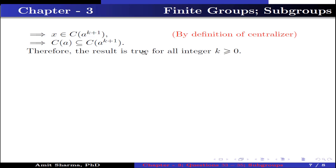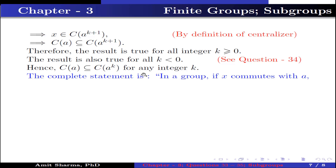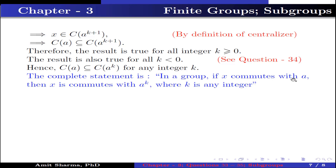Therefore the result is true for all integers k ≥ 0. The result is also true for k < 0 — for more detail see question number 34. Hence C(A) ⊆ C(Aᵏ) for any integer k. The complete statement is: In a group, if x commutes with A, then x commutes with Aᵏ for any integer k.